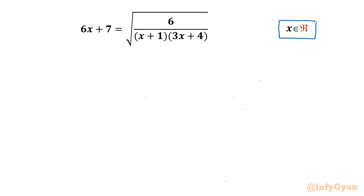Let's get started by writing that the denominator cannot be equal to 0. So the rejection list: x cannot be equal to minus 1, and x cannot be equal to minus 4 over 3.